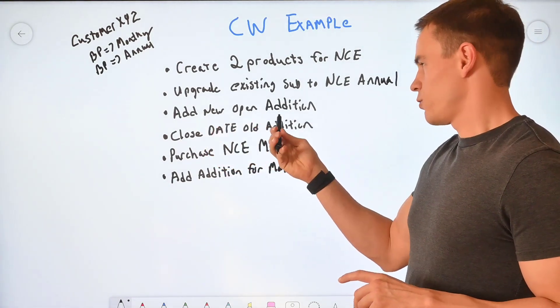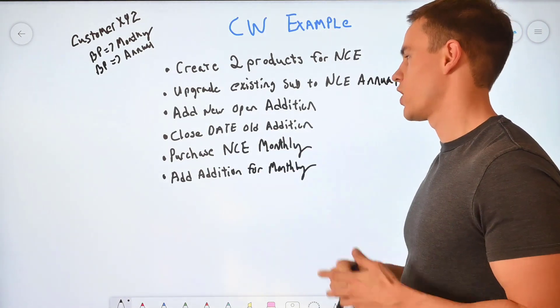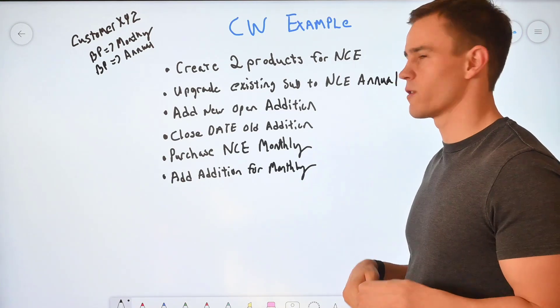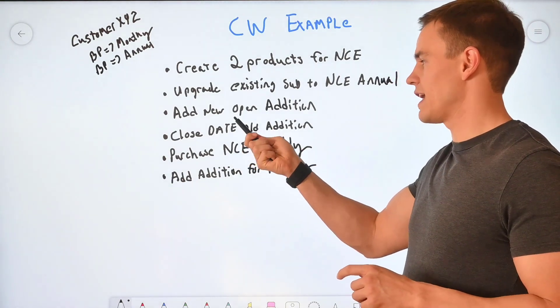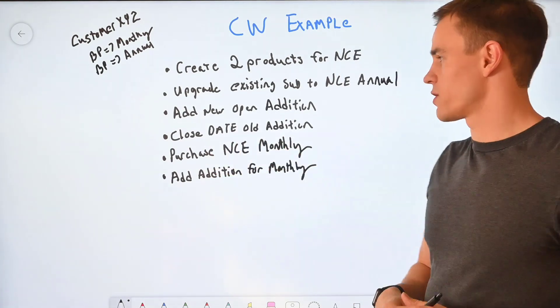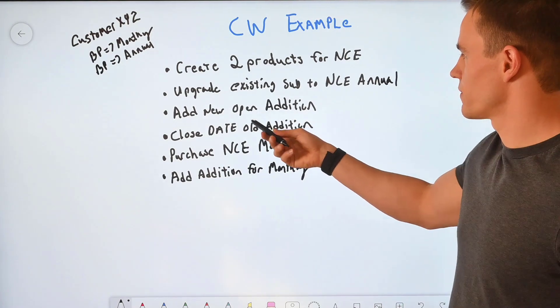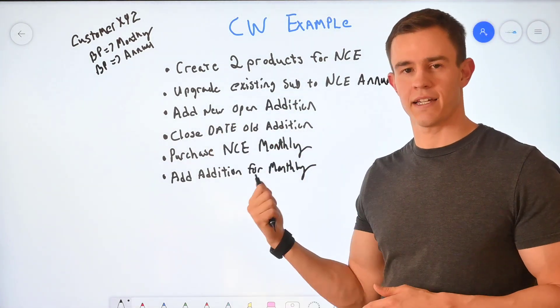You need to add the new edition. It's going to be an open dated edition in ConnectWise. In Autotask or anything like that, you'll just have your start date there with your quantity for the new line item for the NCE product and then you're going to make sure you close date your old edition. This is assuming that you're going ahead and syncing to an existing agreement that you have these legacy ones on.